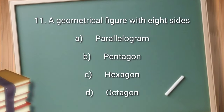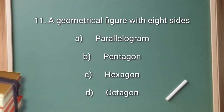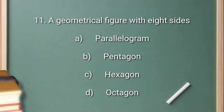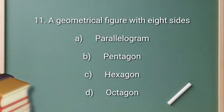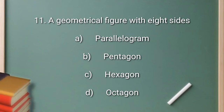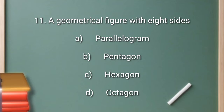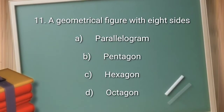Question number 11: a geometrical figure with eight sides. Option A: parallelogram. Option B: pentagon. Option C: hexagon. Option D: octagon.